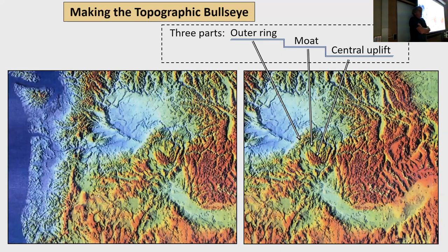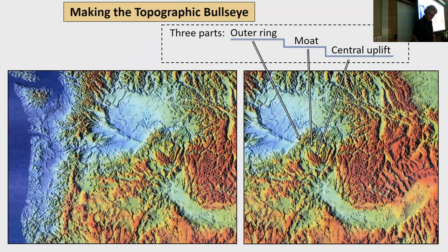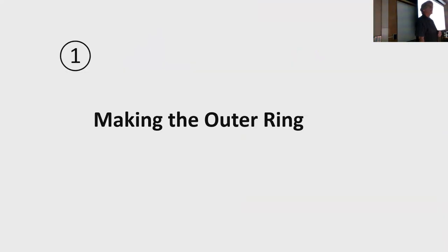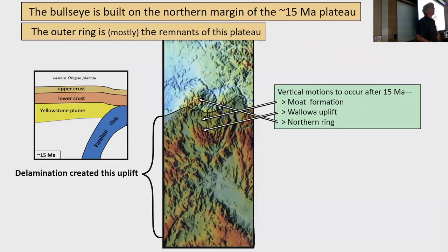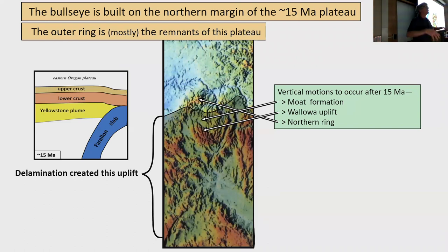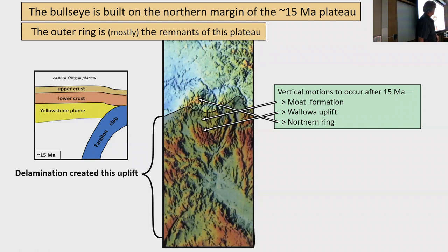I'm going to talk about this post-CRB event in three parts: the outer ring of uplift, the central Wallowa uplift, and the intervening moat that separates the two. Making the outer ring is fairly simple: we already have a plateau, and with the Saddle Mountains and related high-standing areas, we're going to raise the Wallowas and drop down the moat on top of this overall regional uplift. The northern ring I'll come back to — simply put, the delaminated slab created a plateau that was made after delamination finished.